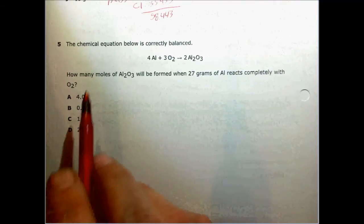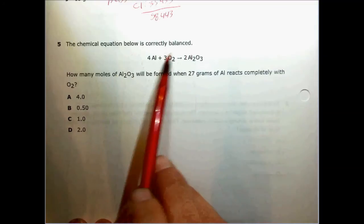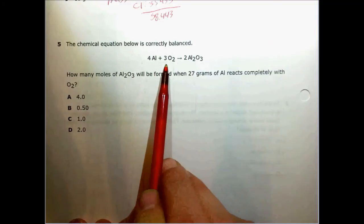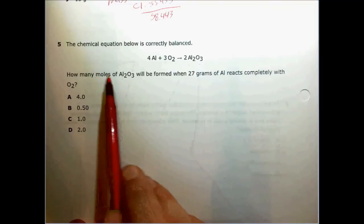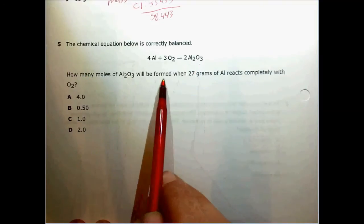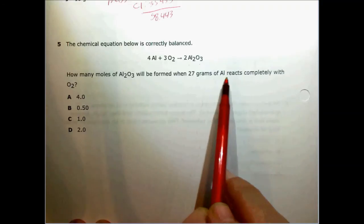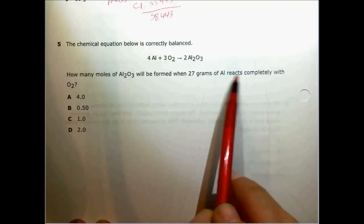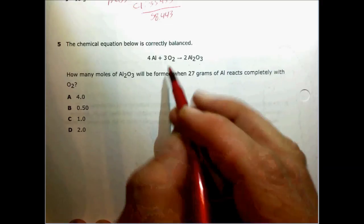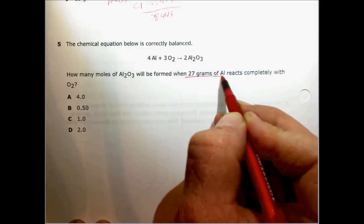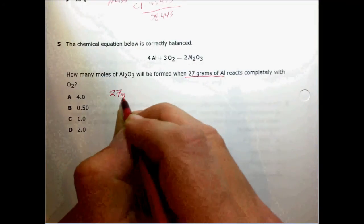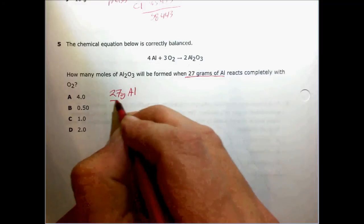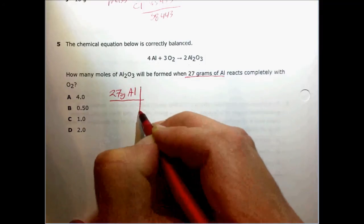Number five says the chemical equation below is correctly balanced. 4 Al + 3 O2 yields 2 Al2O3. How many moles of aluminum oxide will be formed when 27 grams of aluminum reacts completely with oxygen? So let's start with our given 27 grams of aluminum. This, again, is a stoichiometry question.